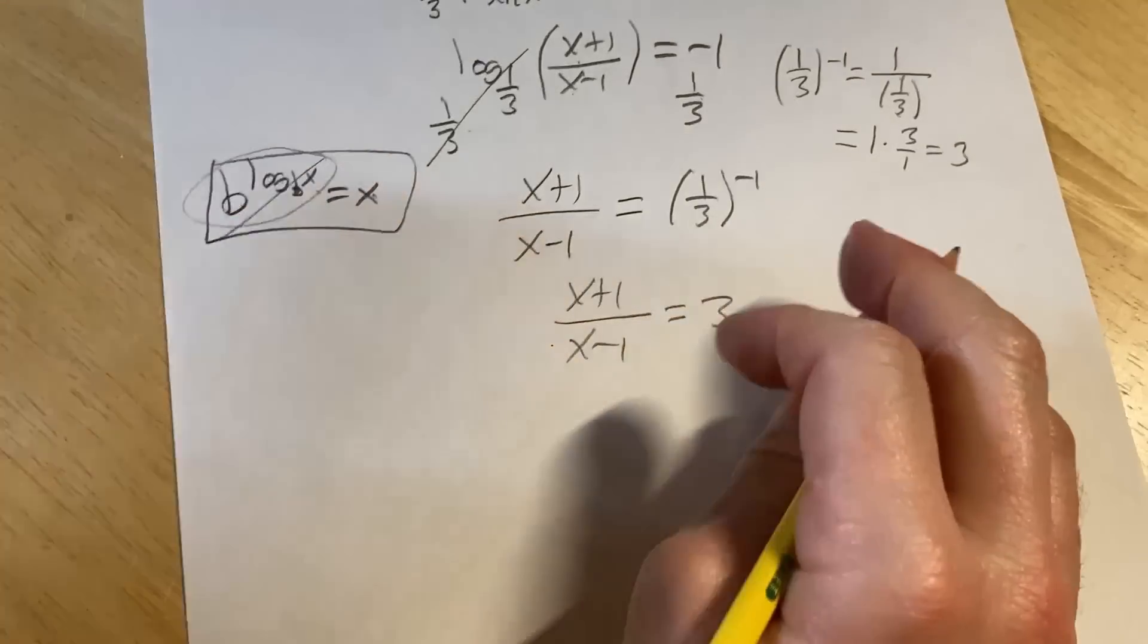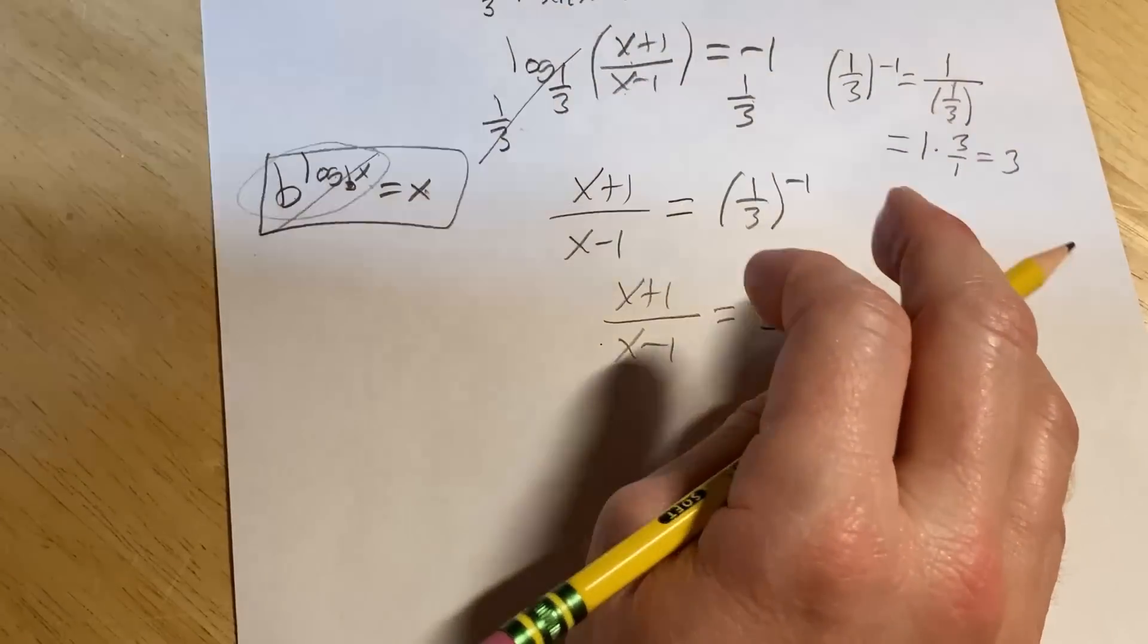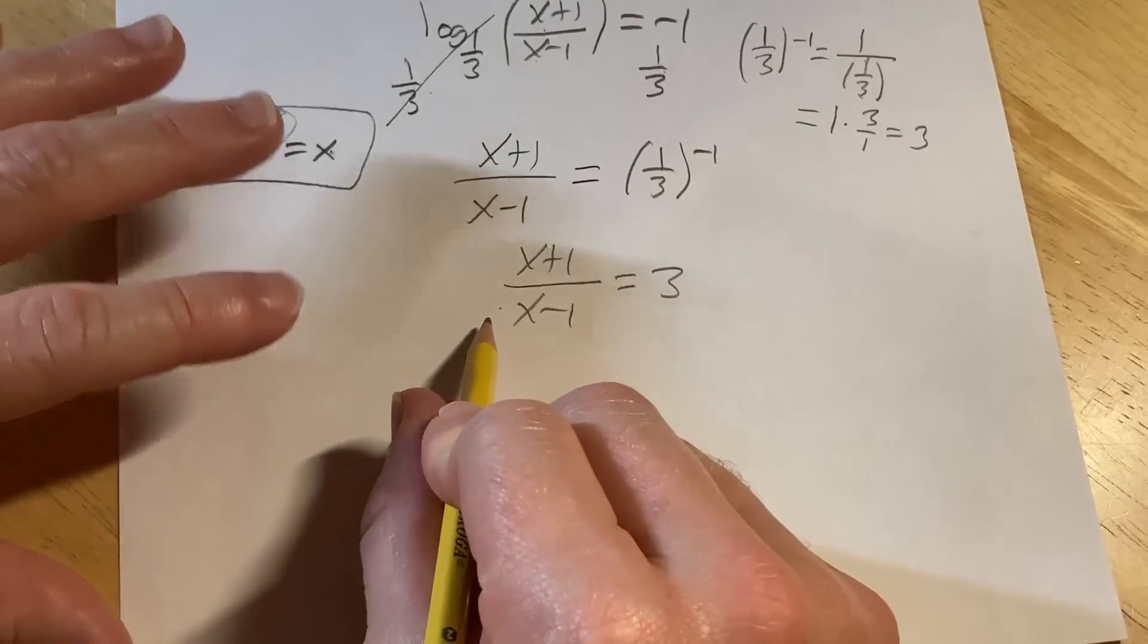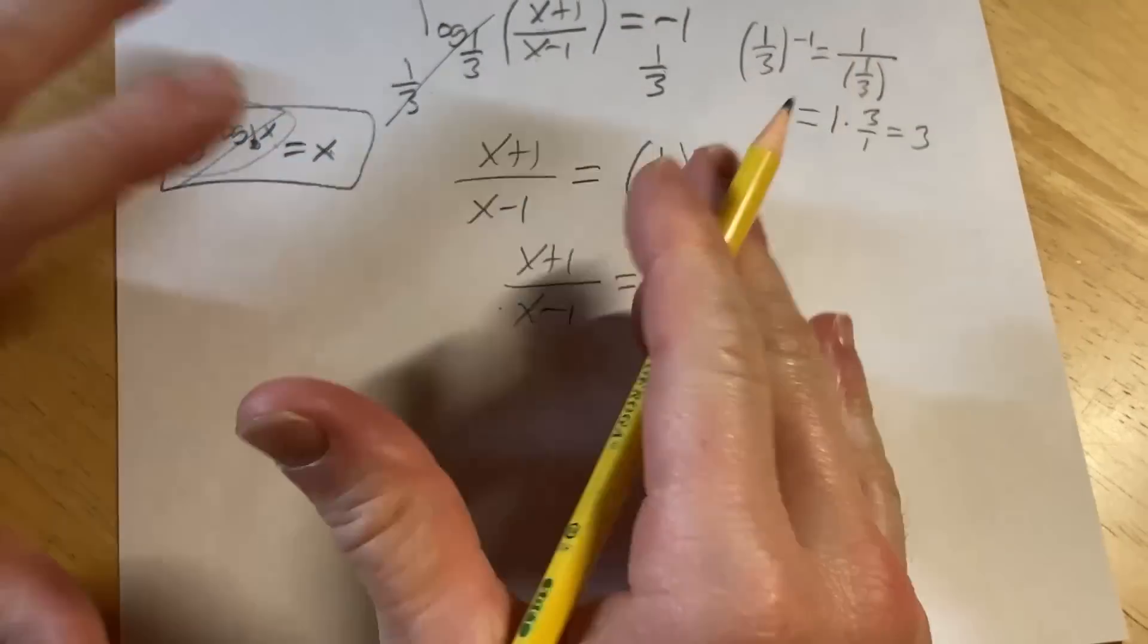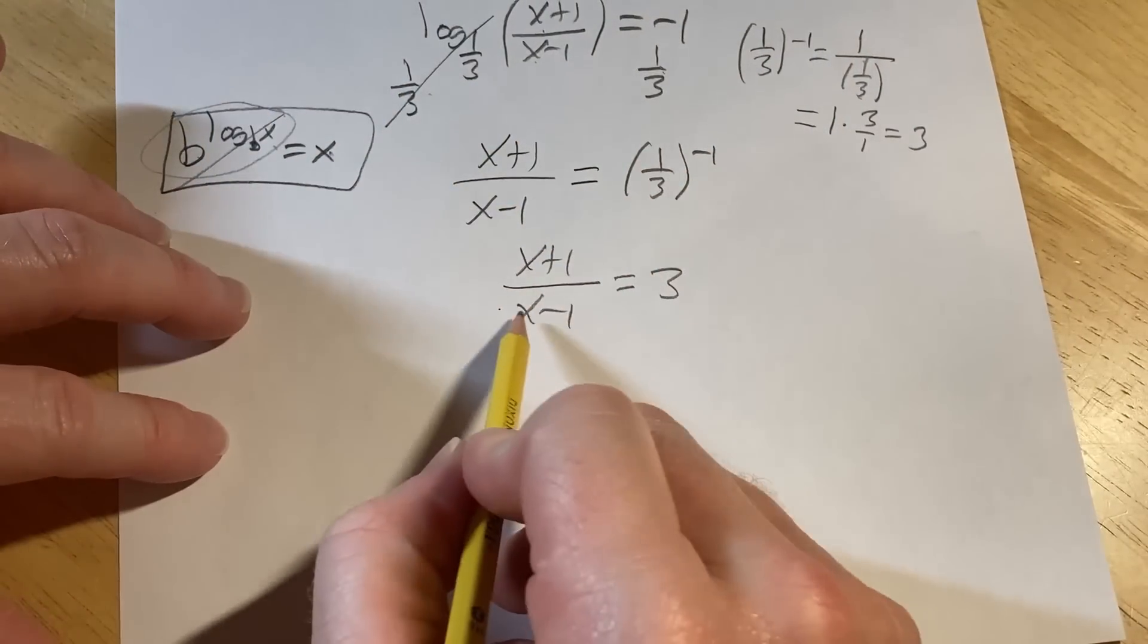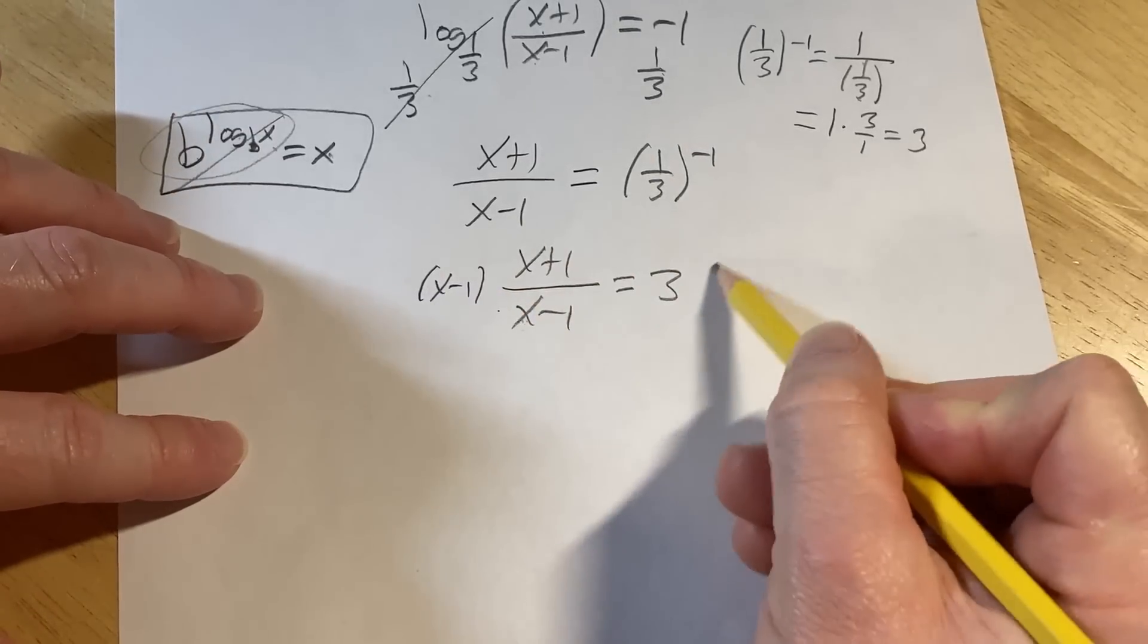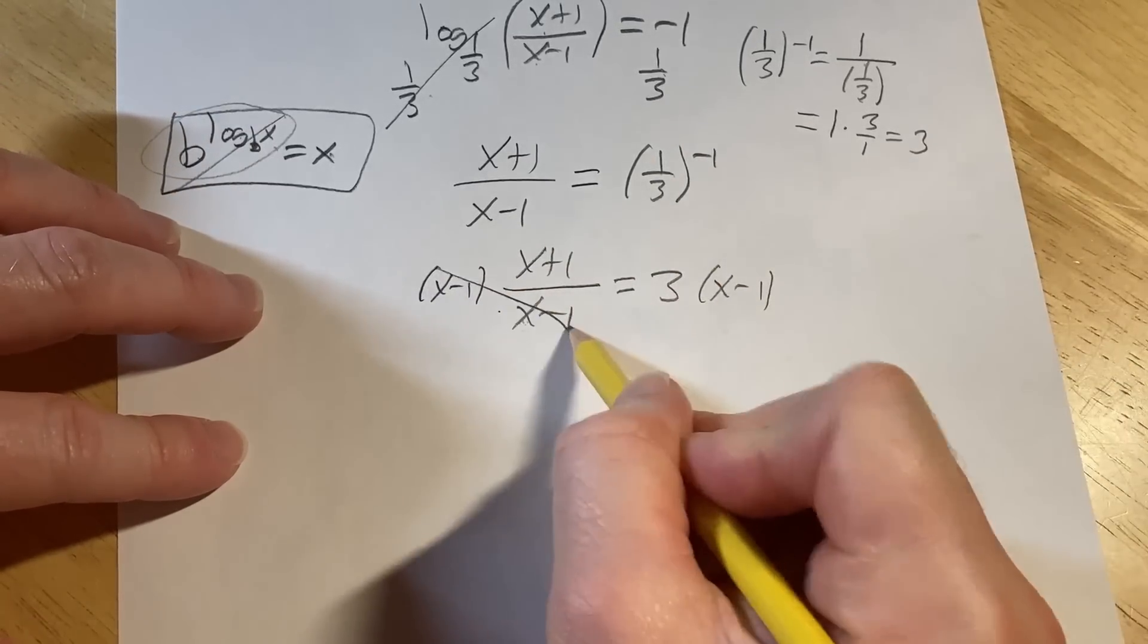I can smell the book from here. I just have to give it a whiff. Ah, smells so good. My copy smells amazing. I love the smell of textbooks. Okay, so to continue solving for this, for x, we have to get rid of this fraction. So there's an x minus one here. So we can multiply both sides by x minus one. These go away.